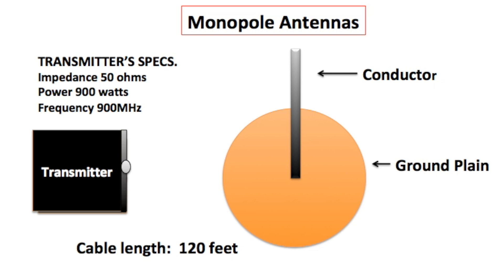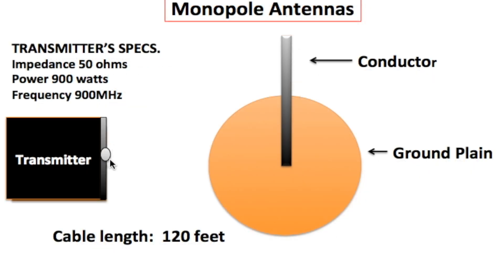In our example, on the left I have a transmitter and on the right I have a monopole antenna. We'll start with the output of the transmitter. The transmitter's specifications are: impedance of 50 ohms, power of 900 watts, and frequency of 900 megahertz. The impedance of this transmitter has to match the impedance of the coaxial cable we're going to connect to this output, and the impedance of the antenna where we're going to connect the coaxial cable also has to be 50 ohms.